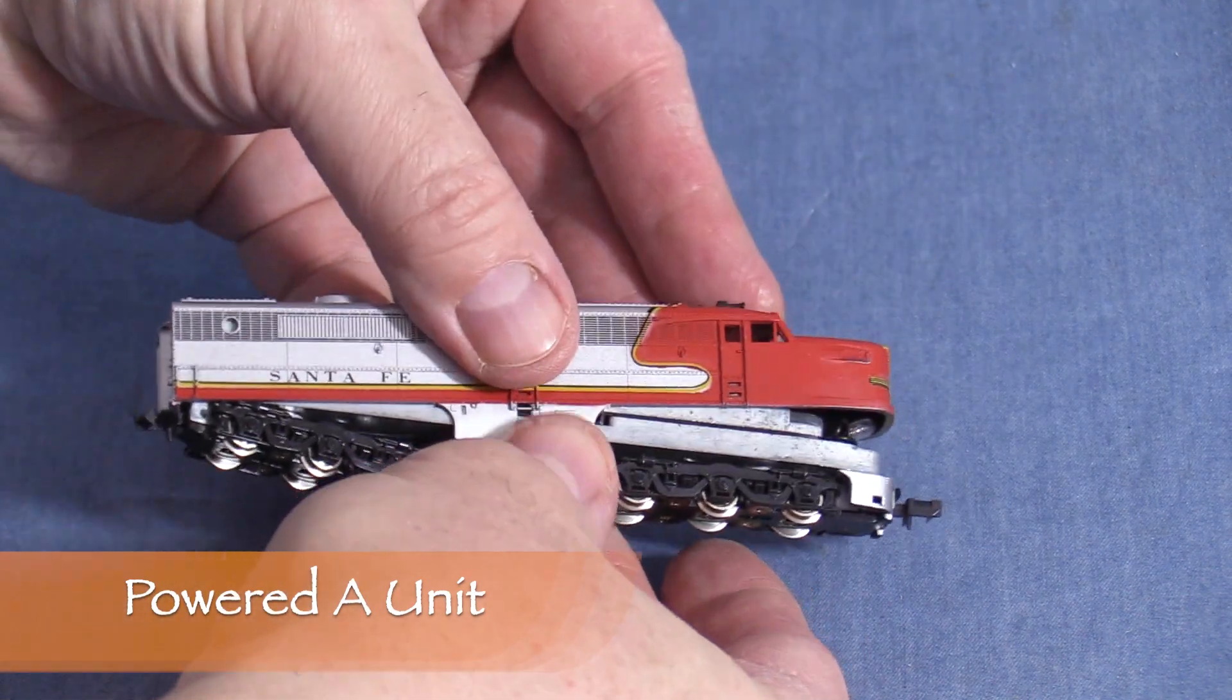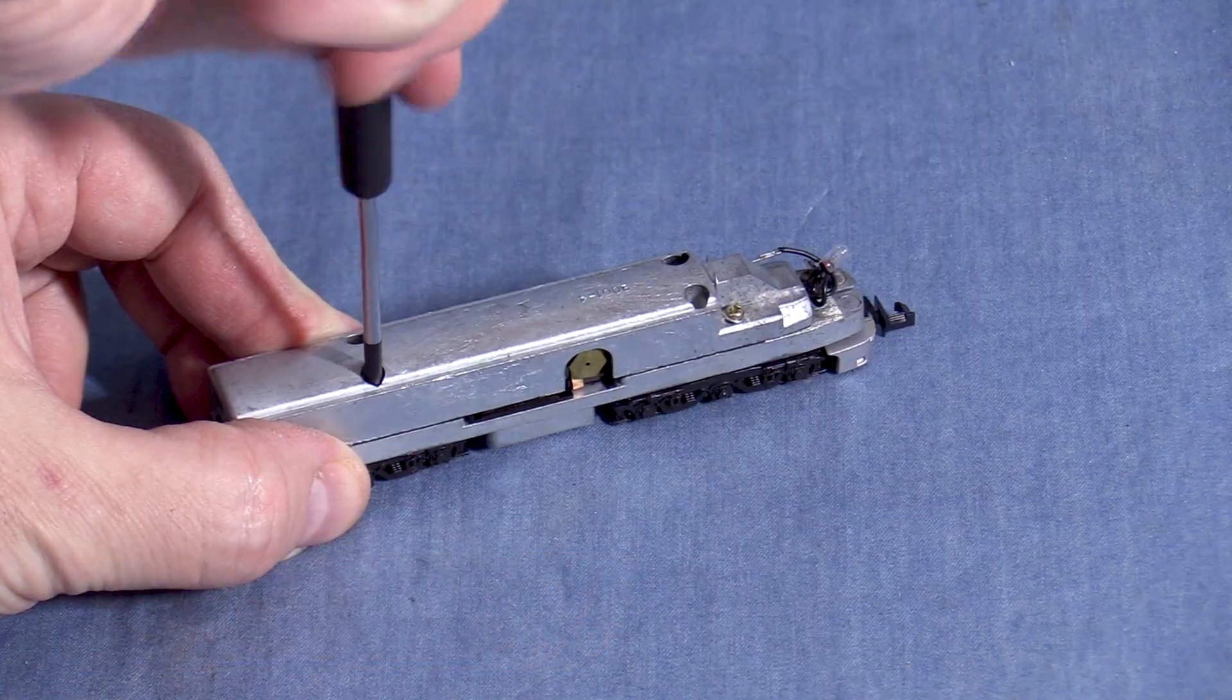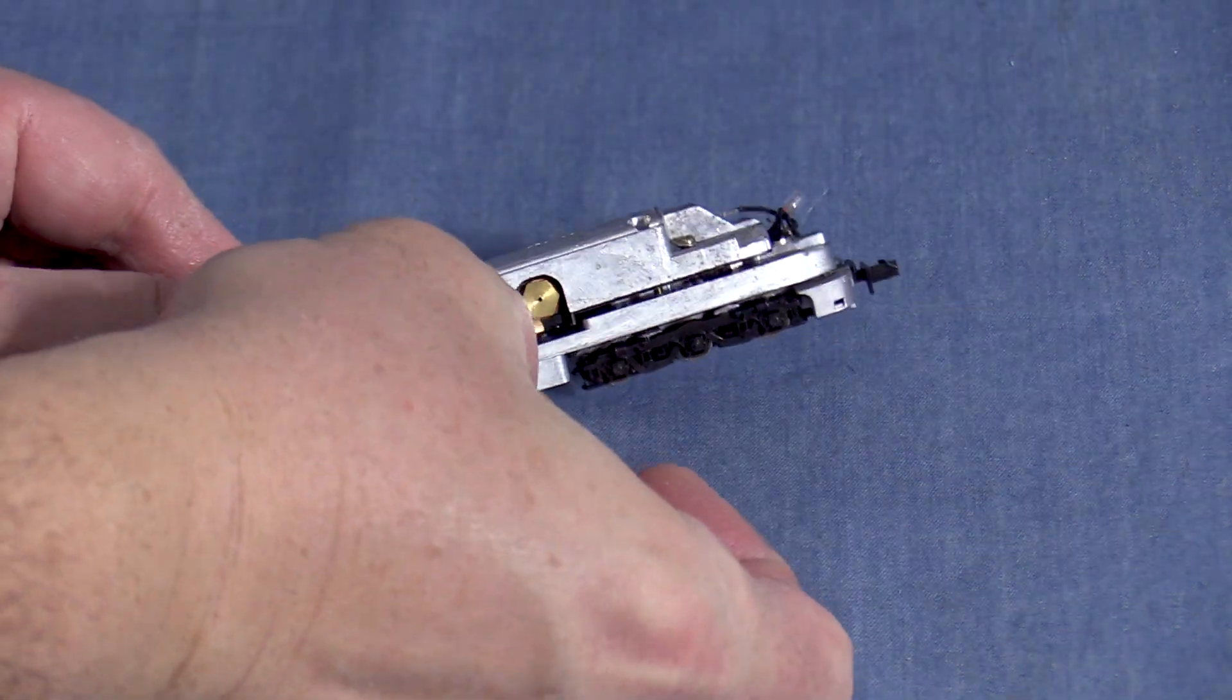Spreading the shell slightly releases the chassis. I'll remove the screws on one side to partially disassemble the frame so that I can remove the trucks.